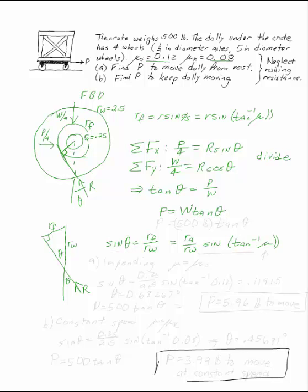W, we know, is 500 pounds. So now I need to know what theta is. But I know that sin theta is ra over rw sin tan inverse of mu. So now I know what the answer's got to be. I need to figure out which mu I'm using in various cases.